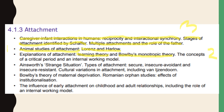Next we've got Ainsworth's strange situation and the types of attachment — that's an easy 16 marker. And don't forget hiding here is cultural variations in attachment, which could also be a 16 marker. So probably two there. Then we've got Bowlby's theory of maternal deprivation — which is different from his monotropic theory — and the Romanian orphan studies, so two there as well. Finally, we've got the influence of early attachment on childhood and adult relationships, which is likely to be one 16 marker covering both childhood and adulthood. It could also be separate eight markers — one on childhood, one on adult relationships.